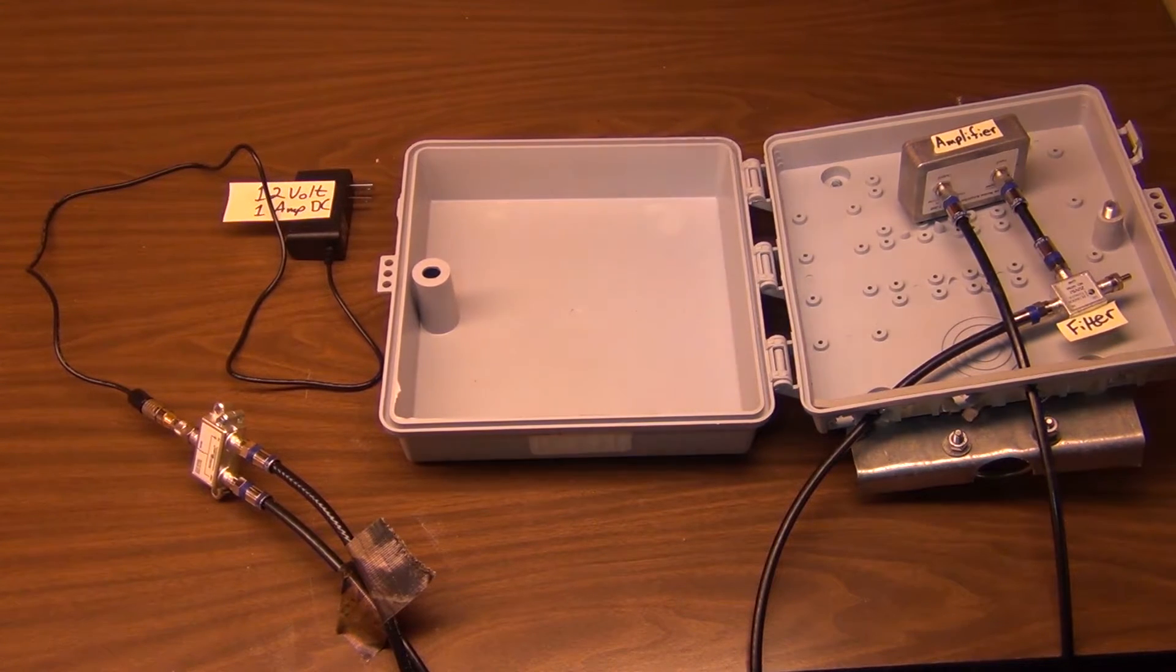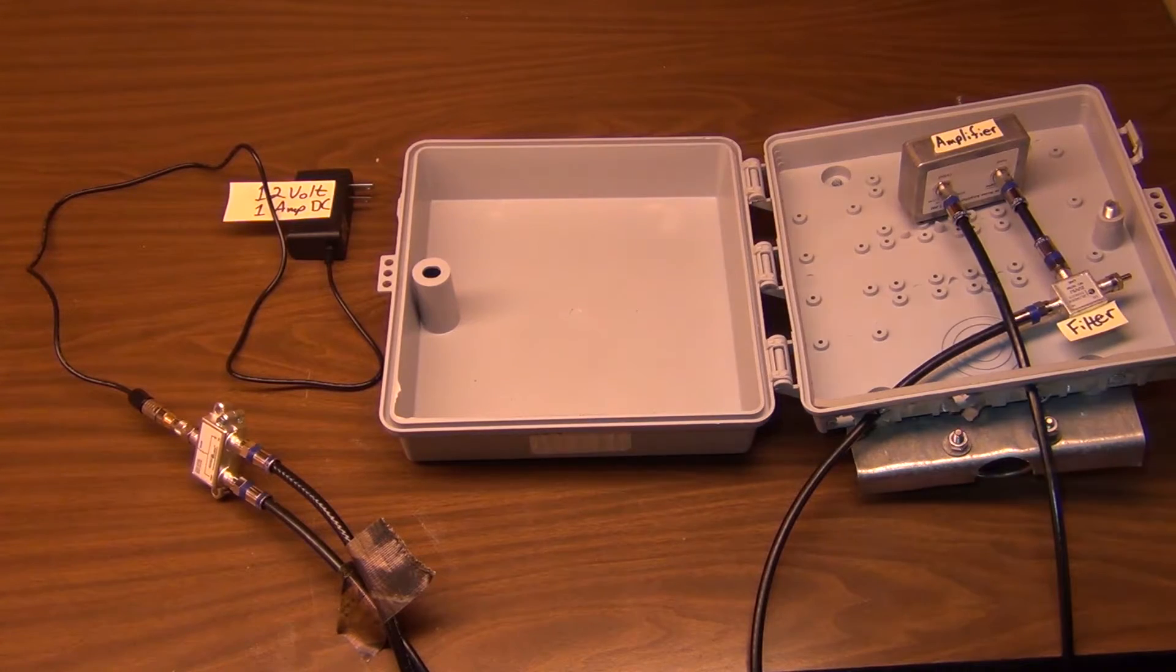What I have here is an amplifier system for over-the-air TV signals, and what I wanted to share is I had a problem with a UHF channel that had strong signal but it was interference, breaking up, and it was kind of odd what's going on. And playing around, this is what I wanted to share, so I discovered...